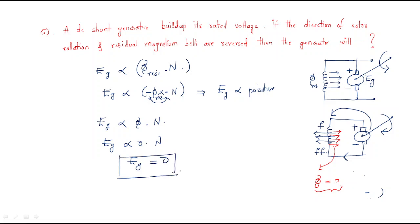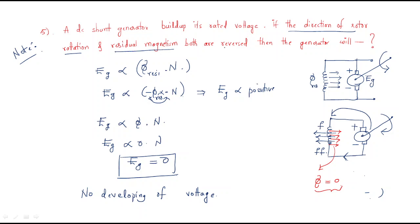At the initial stage the EMF is positive, but due to the positive EMF, the flux will change and become zero. Therefore there is no developing of voltage — that is the very important result. Note: if the direction of rotor rotation and residual magnetism are both reversed, the generator will not develop any voltage.